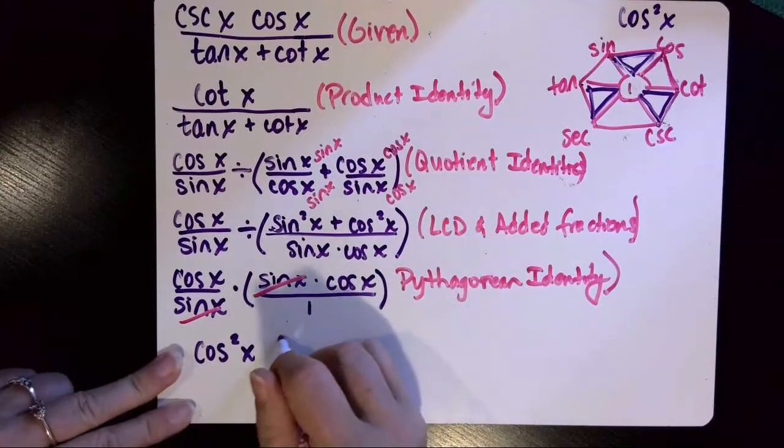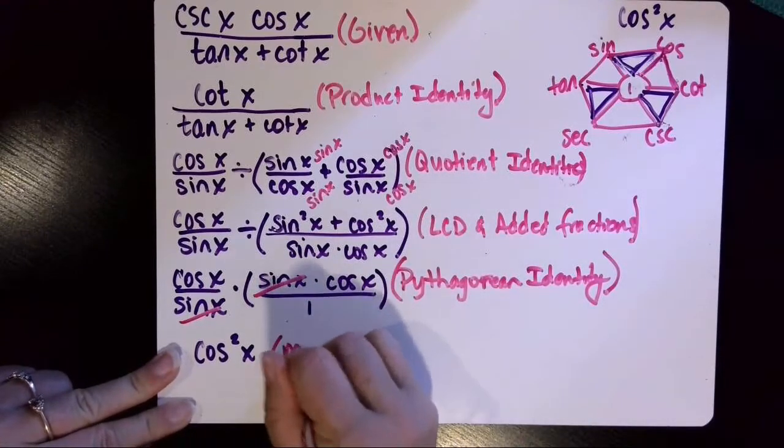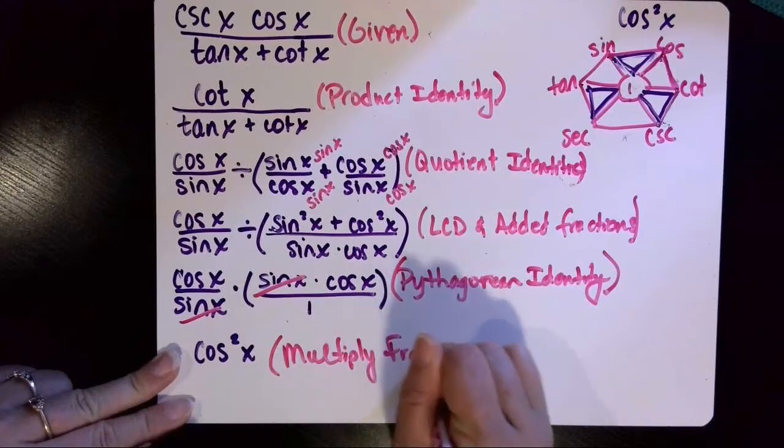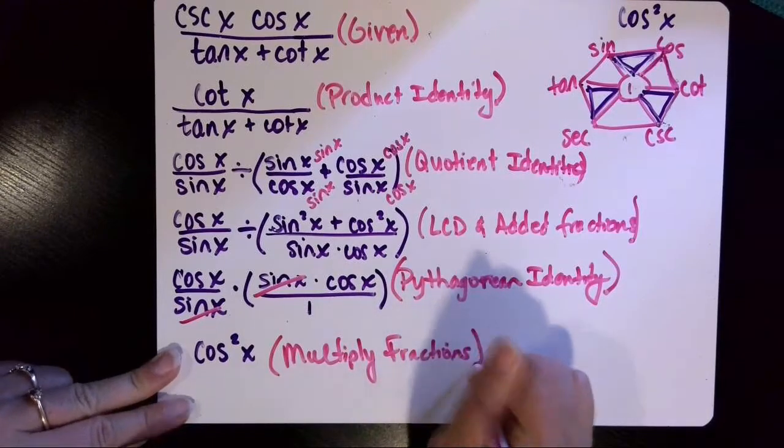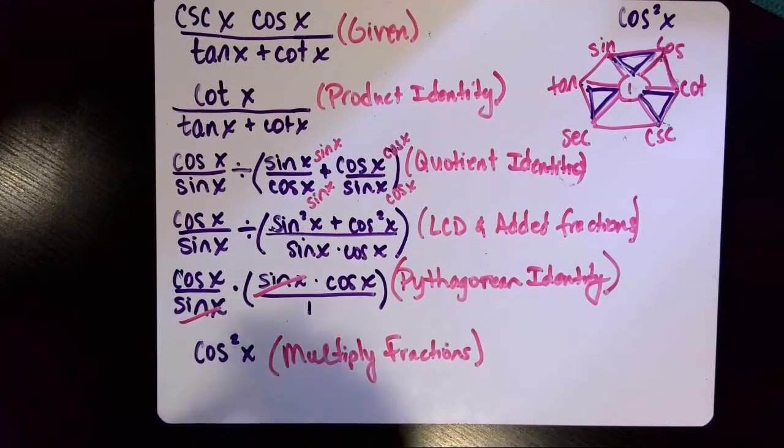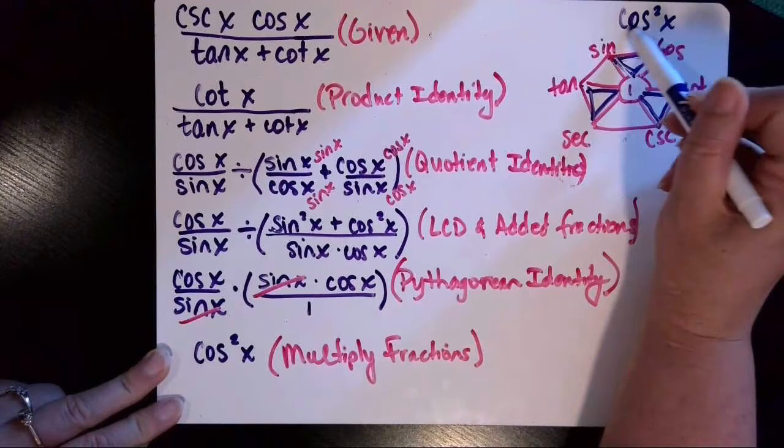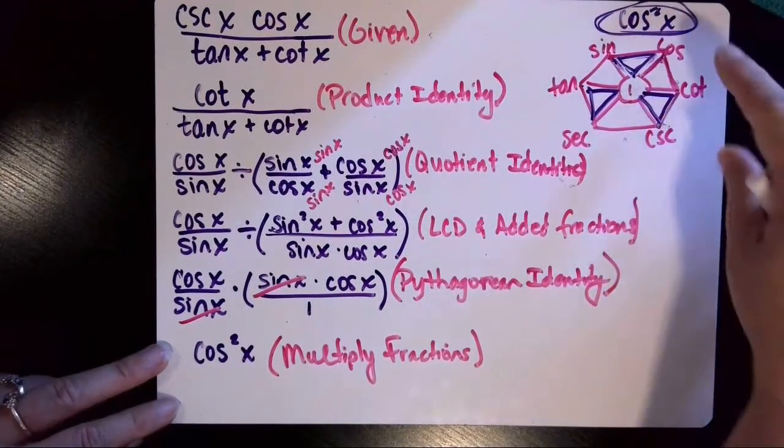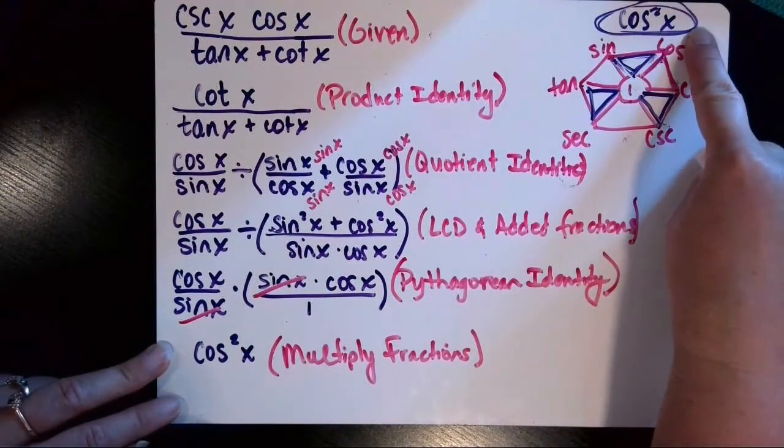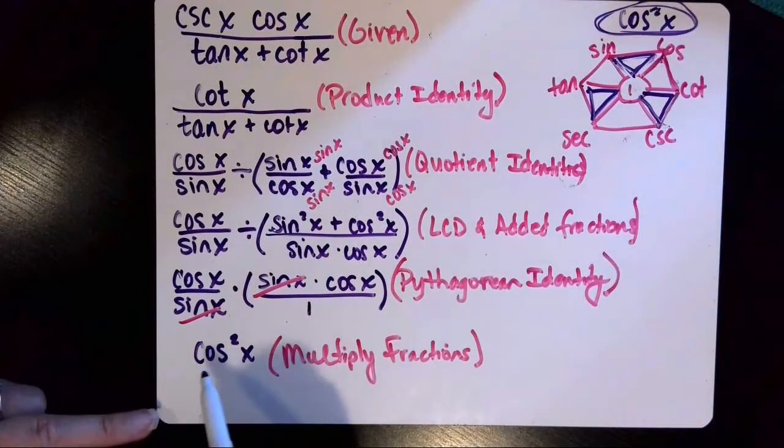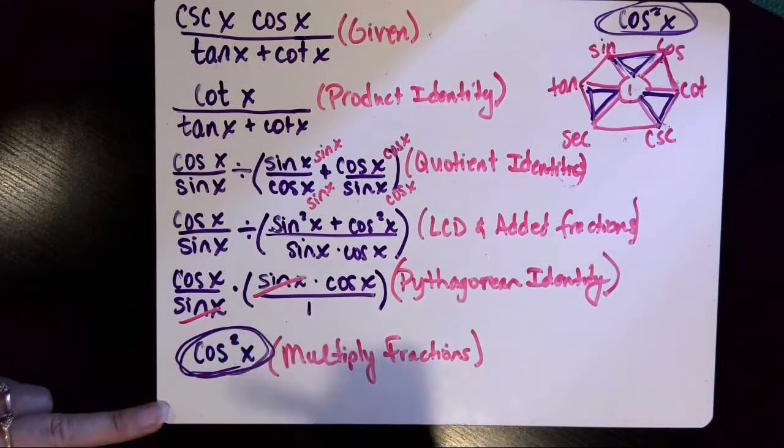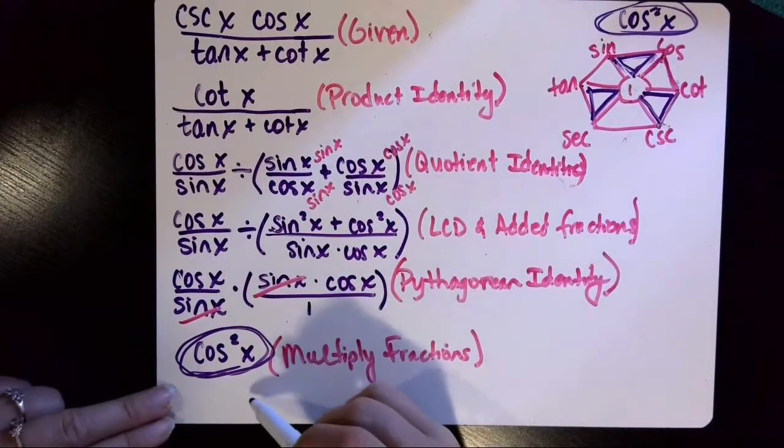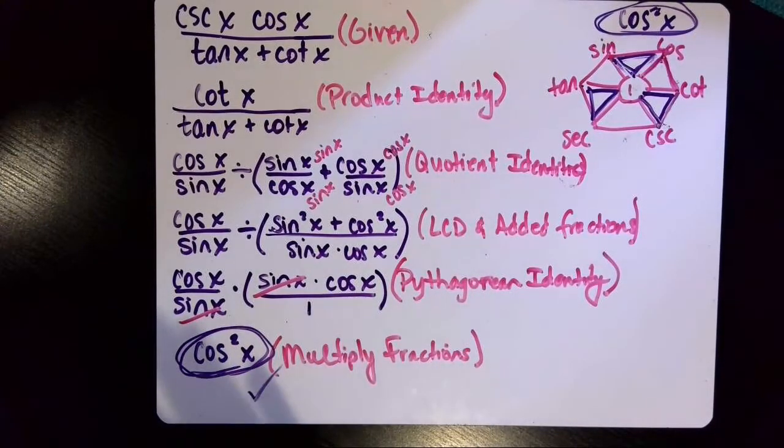And when I look back up here at what my goal was, it was to apply identities in algebra to end up with cosine squared x. And we've done it. We've ended up with cosine squared x. And so we've met the goal, and this identity has been verified.